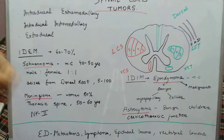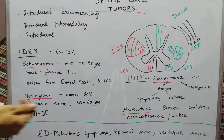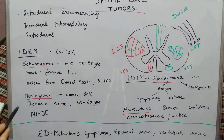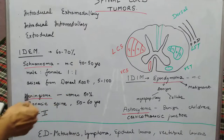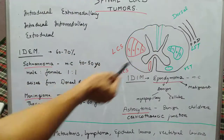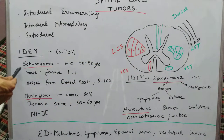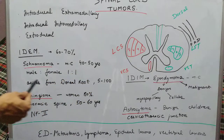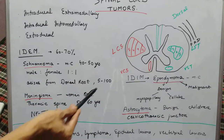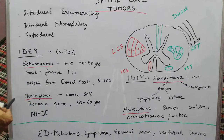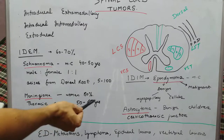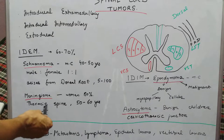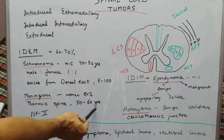For intradural extramedullary tumors — in the region of pia mater and arachnoid mater — we have the dorsal root ganglion and meninges. The most common tumor here is schwannoma, arising from the dorsal root, seen in the 40–50 year age group with equal male-female incidence, and it is S-100 positive. Another common tumor is meningioma, mostly seen in women (~80%), involving the thoracic spine, in the 50–60 year age group.